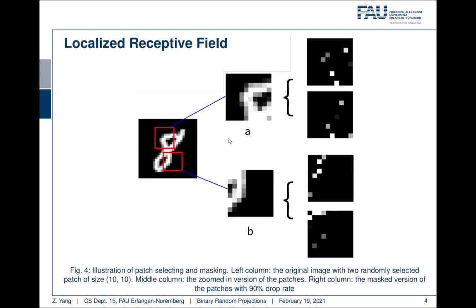In order to incorporate this random projection into our image classification task, we did the following. Given the input image of size 32 times 32, we randomly crop some patches of size 10 times 10. Then we randomly drop 90% of the pixel values from these patches and sum them up into one value, just like the random projections select some of the projection neurons and project them into the kenyon cells.